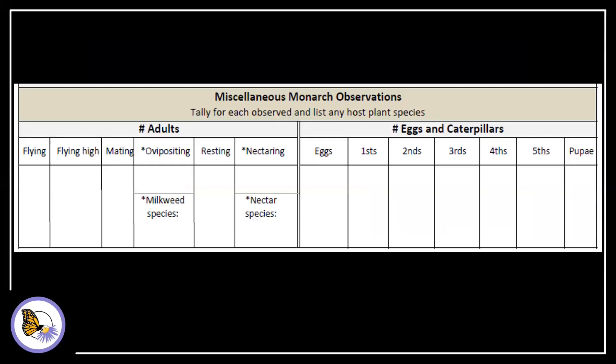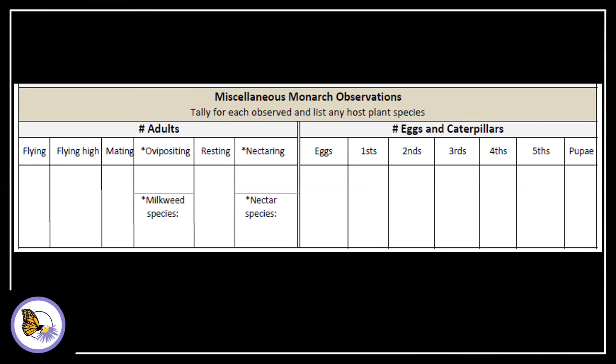Finally, on the bottom of every data sheet, there's a section to record miscellaneous monarchs. Here, an adult flew by while we were setting up our plot, and we saw a fifth instar while we were recording our forb cover. So we can record these two incidental occurrences.